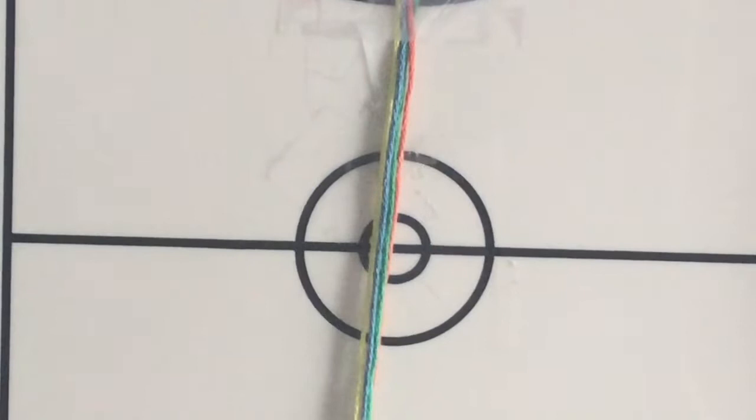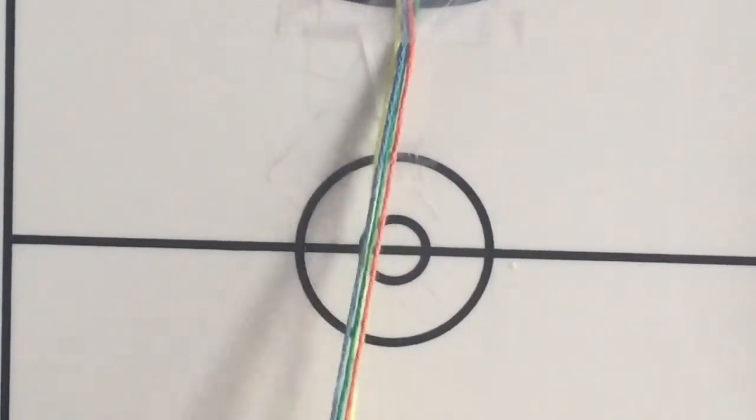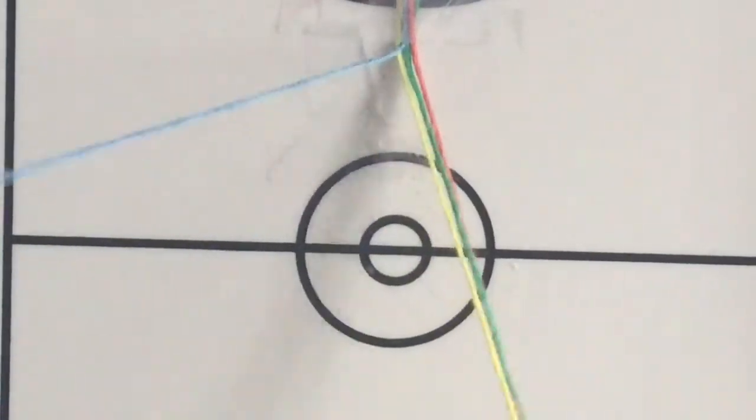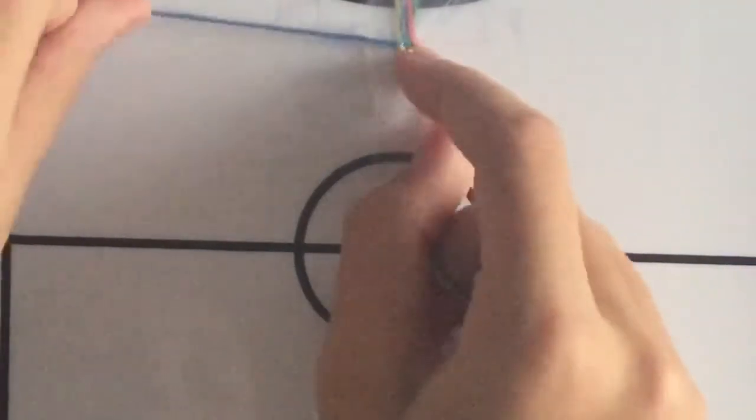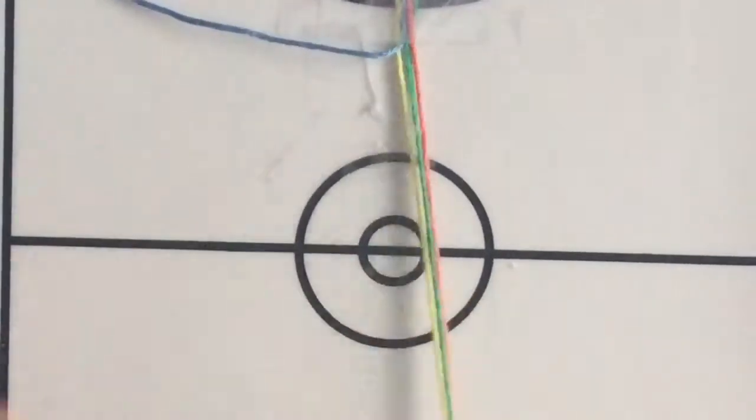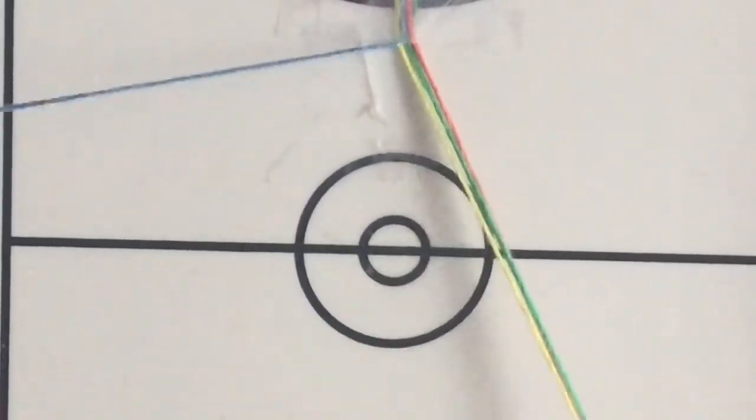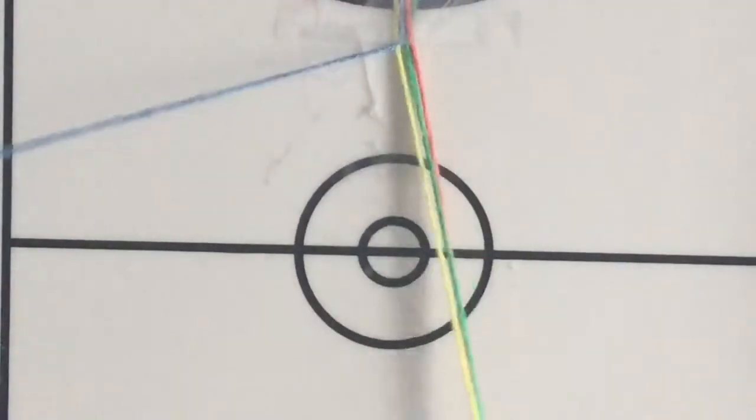But to start off this bracelet, I'm going to choose my first color that I want to show up and I think I want blue to be first. So I'm just going to separate blue out from the bundle of strings. So we have this bundle right here and then we have separated the color that you want to show up first.